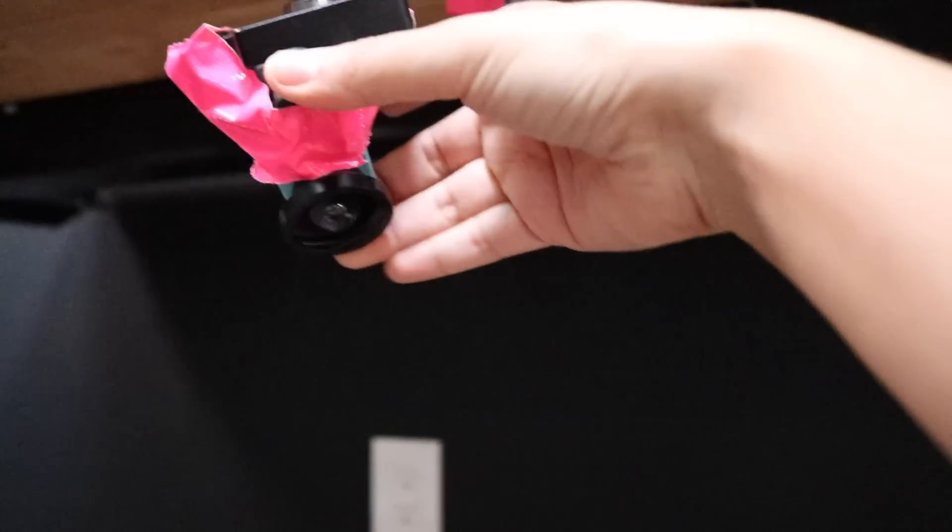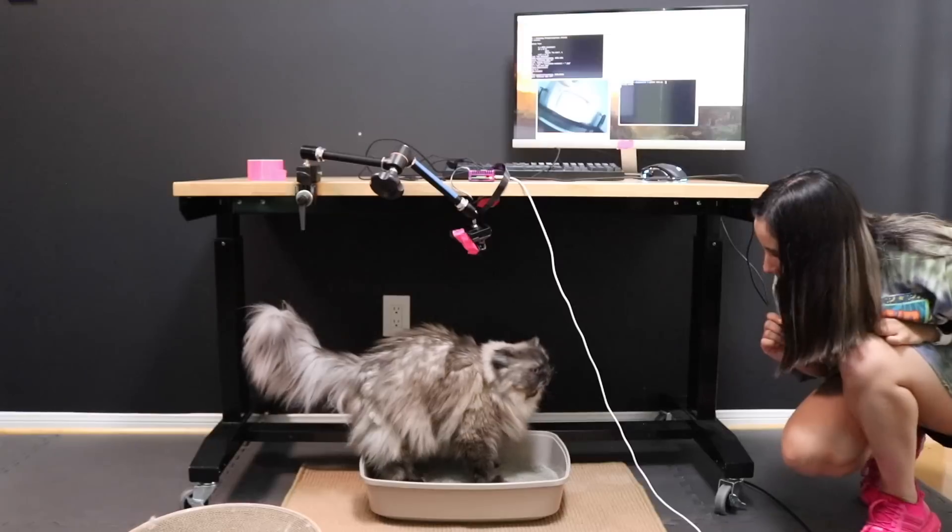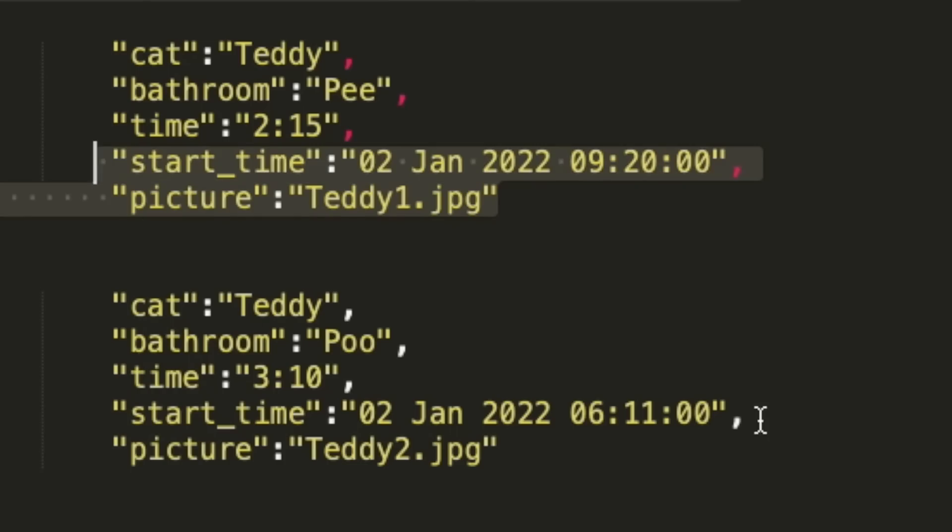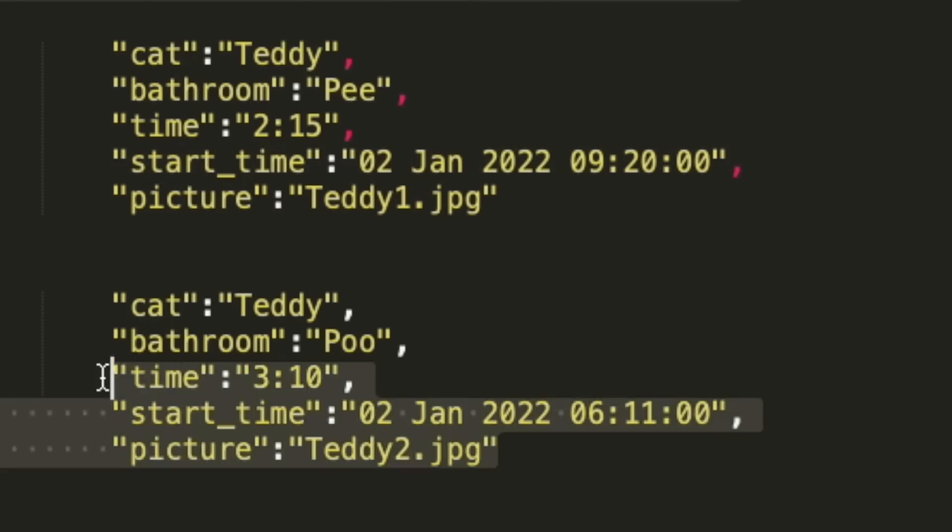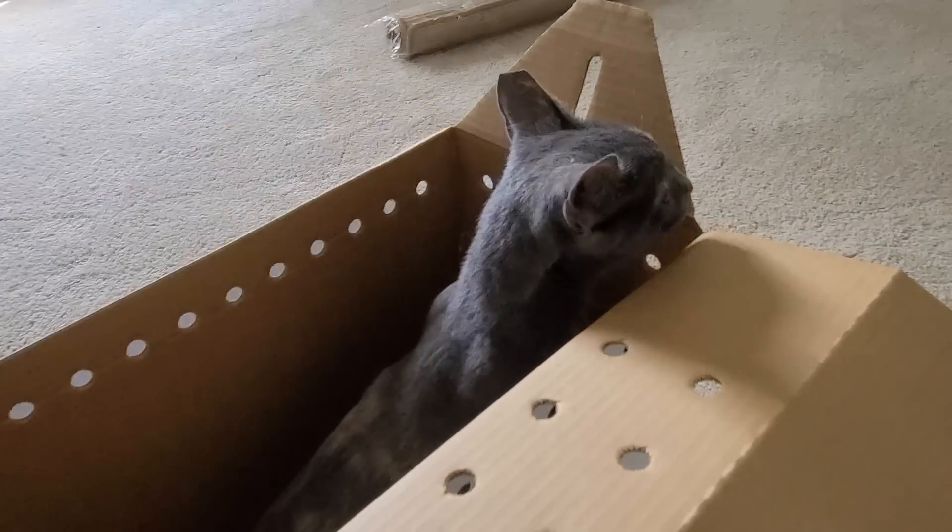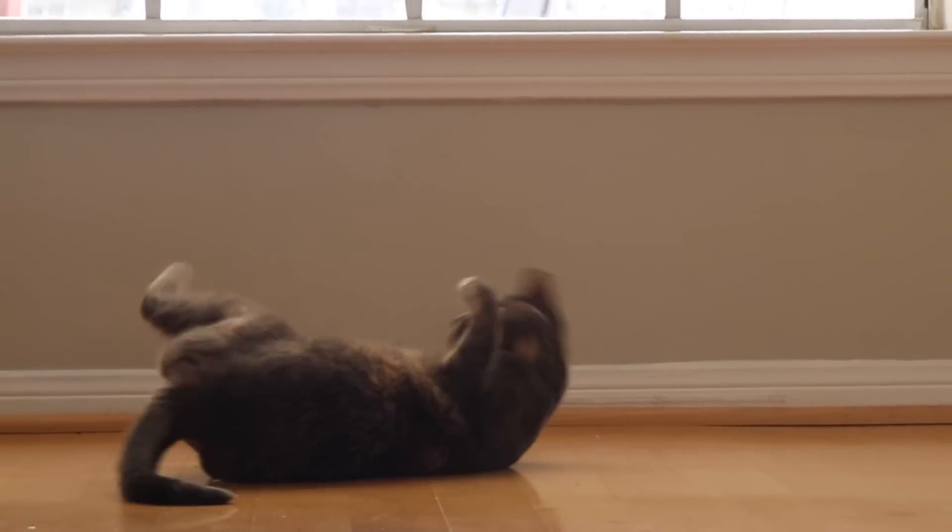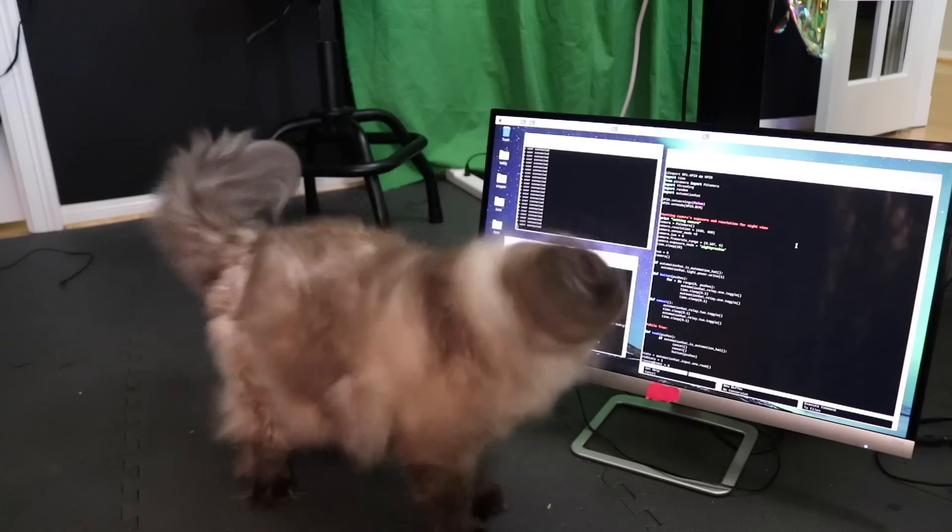So I wrote a Python script, set up a camera and motion sensor, and put it above his litter box to take a picture every time he went to the bathroom. That way I could see if he was constipated or not. But there was a tiny problem. This is Luna, this is technically not my cat, this is Teddy Bear's cat, and she uses the same litter box as Teddy. So when I see poop, I don't know who pooped. Also, Teddy was not impressed with my Python script.